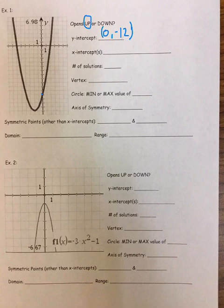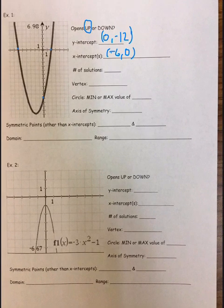The x-intercepts you can see are right here and right here at negative 6, 0, and at 2, 0.